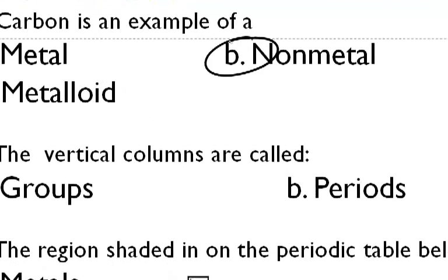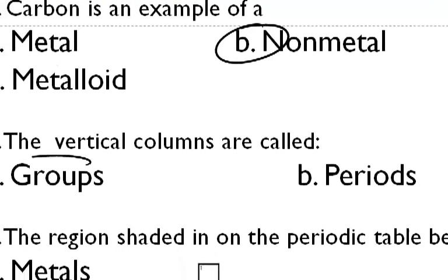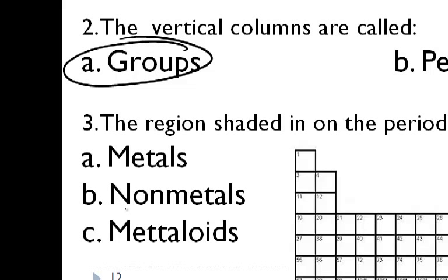So take a second to review what we've talked about. Carbon is a non-metal, the vertical columns are groups, and the region on the periodic table are non-metals.